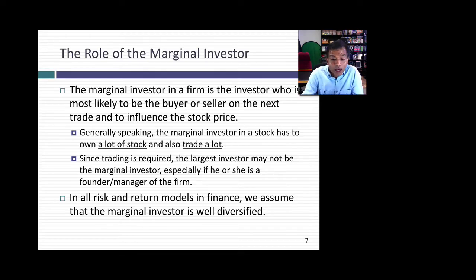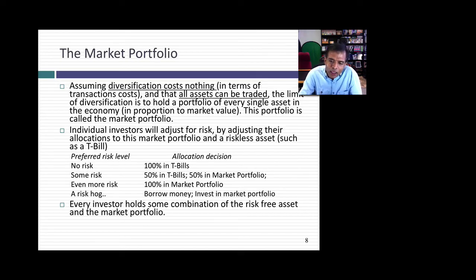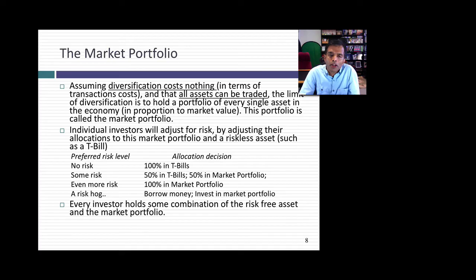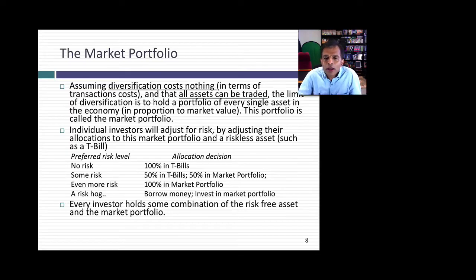This matters because as you diversify, the way you think about risk changes — risk becomes what a stock adds to your portfolio. The Capital Asset Pricing Model, CAPM, is built on the presumption of no transactions costs and no ability to pick stocks. Under those assumptions, you will never stop diversifying until you own every single traded asset in the market — what we call the market portfolio. It sounds absurd, but without transactions costs as a counterweight, the benefit to diversification remains positive even for the 40,000th stock you add.